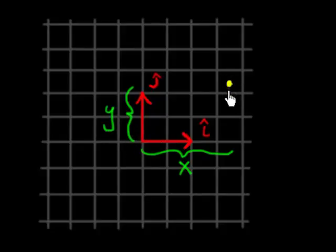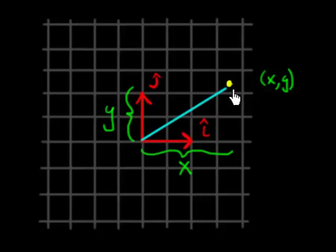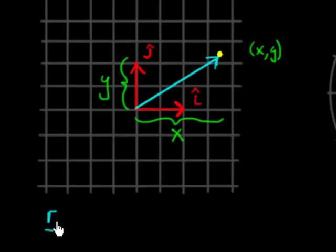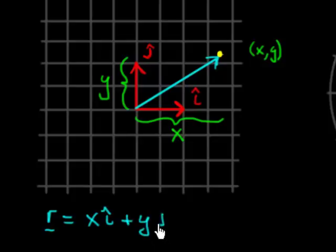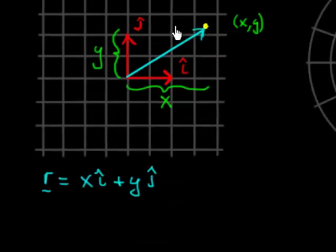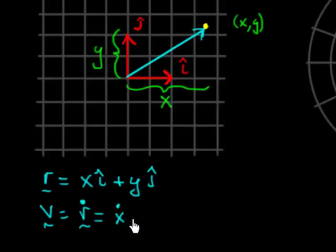If you want to write that position in terms of a vector, you define a vector that's a straight line starting at the origin going to the point. That position vector r equals x in the i-hat direction plus y in the j-hat direction, where i and j are the horizontal and vertical directions respectively. If this position is moving in time, the velocity is just the time derivative of position — x-dot in the i-direction plus y-dot in the j-hat direction.